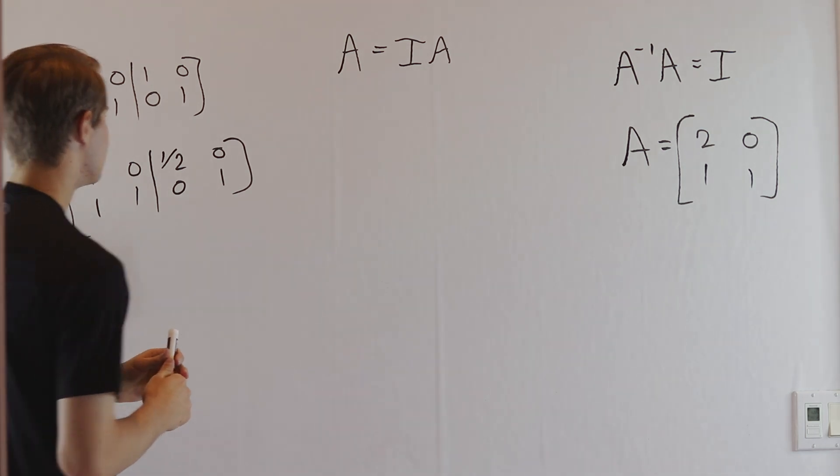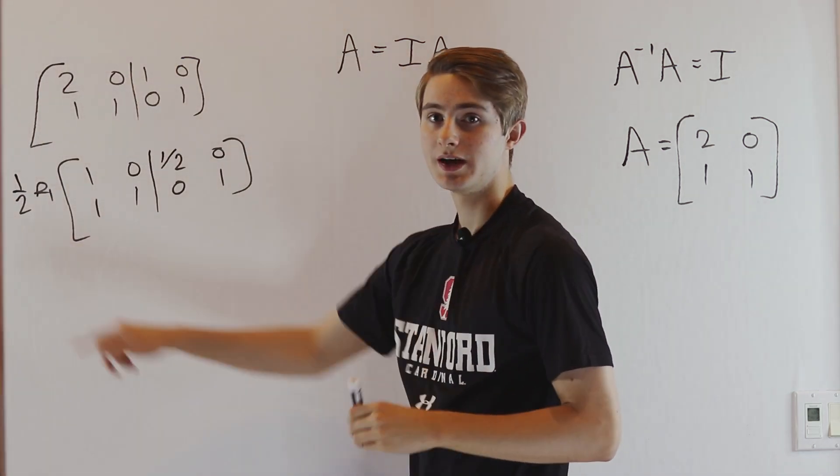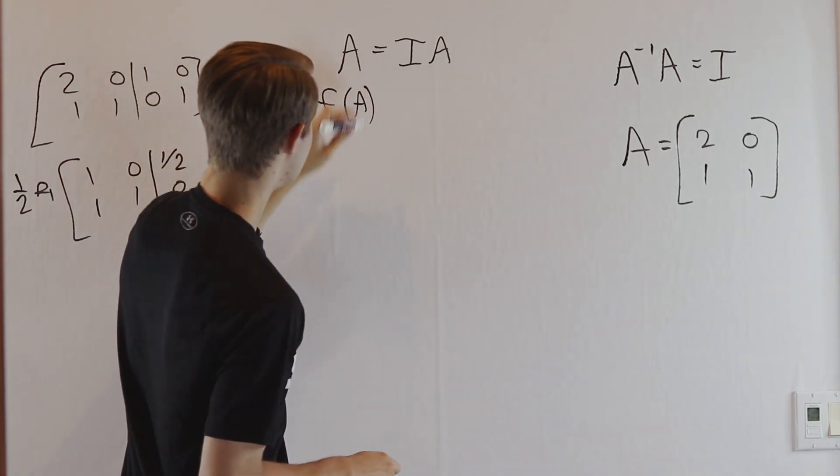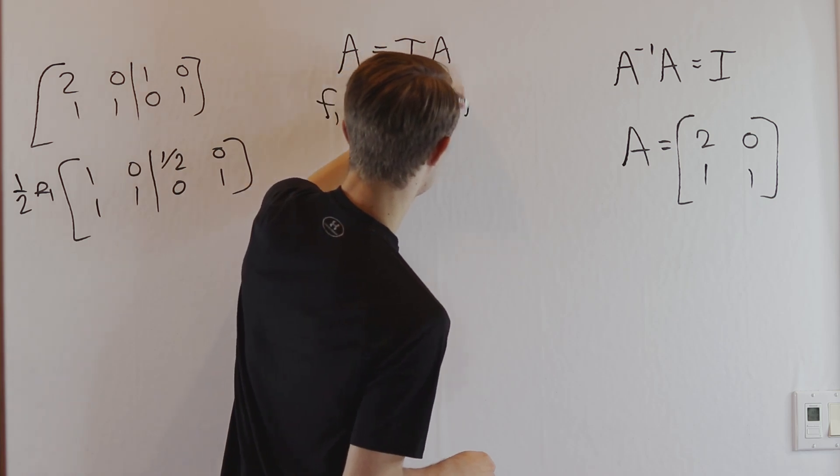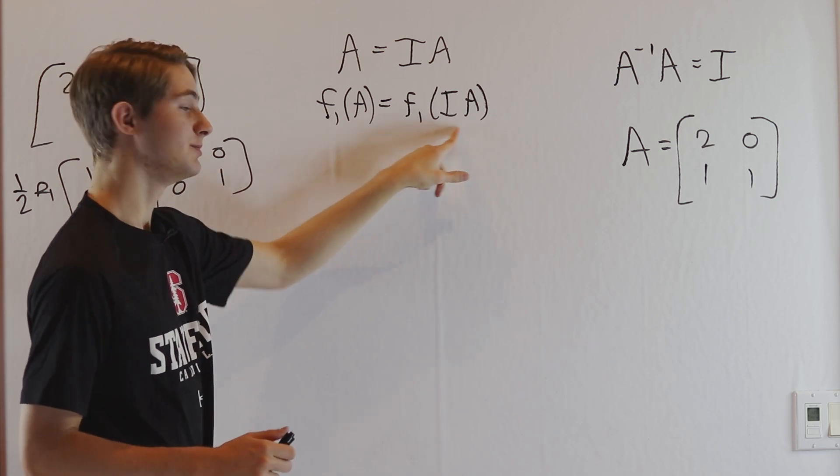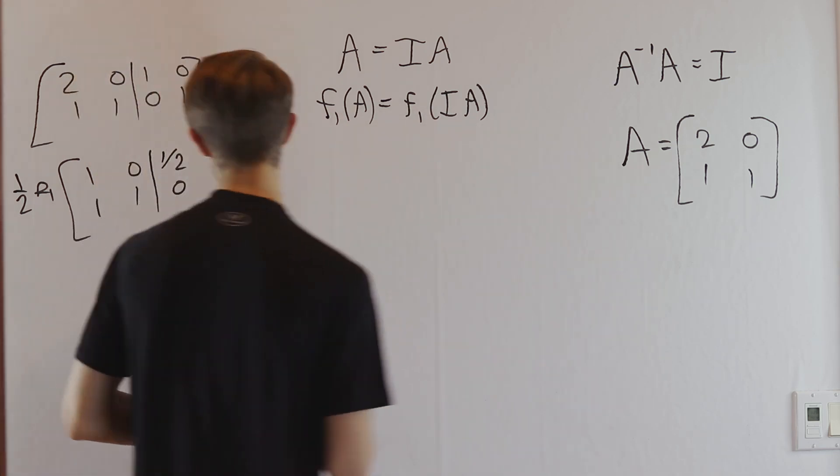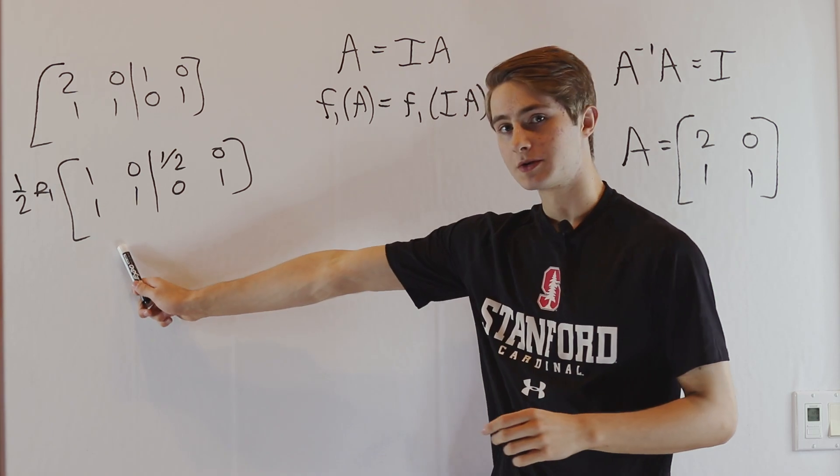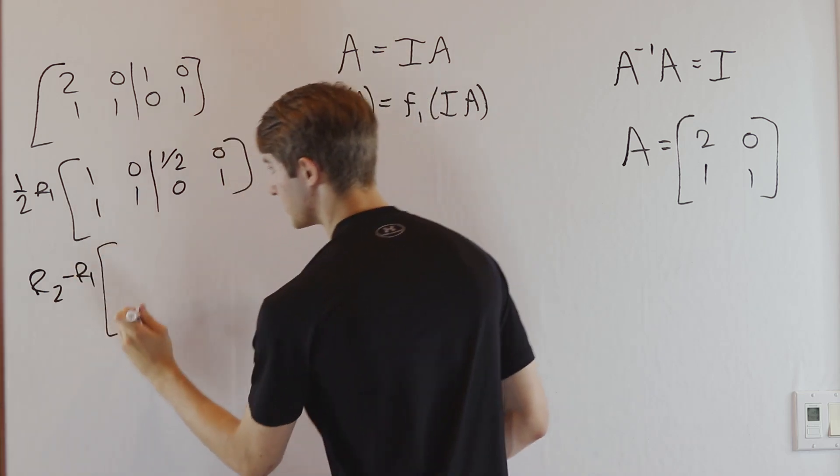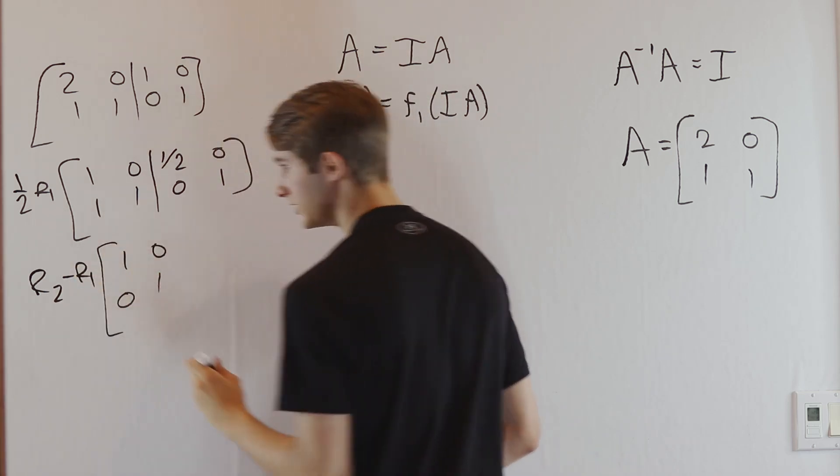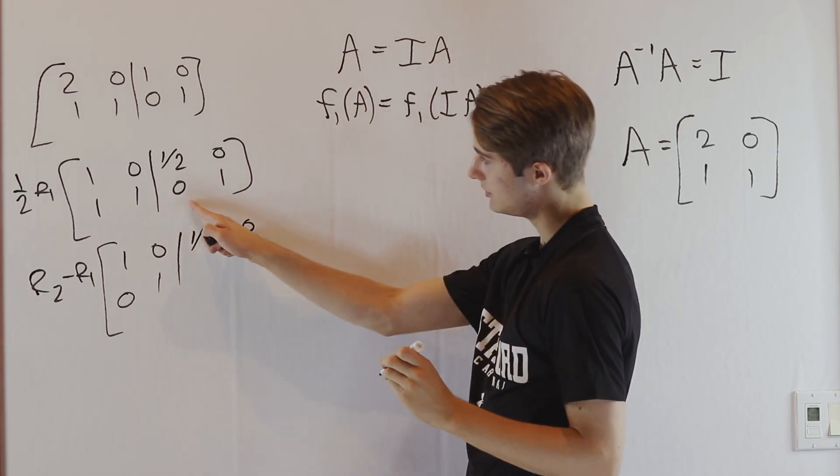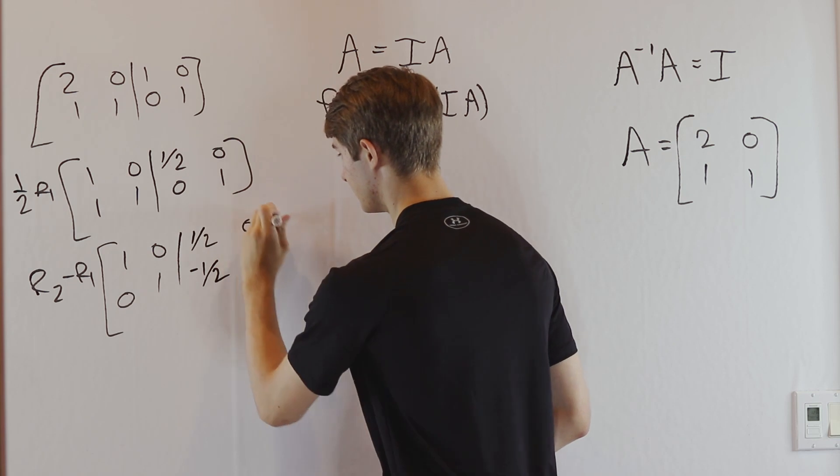We'll think about this row operation (1/2)R₁ as a function. We'll call it f₁(A) = f₁(IA). If we do this row operation to A, it's the same as doing it to IA since they're equal. We have one more row operation to get to the identity. If we do R₂ - R₁, we get [1, 0; 0, 1] on the left side. On the right side: [1/2, 0; -1/2, 1].